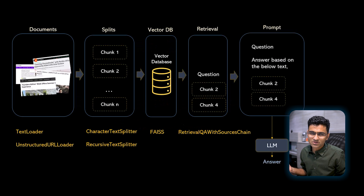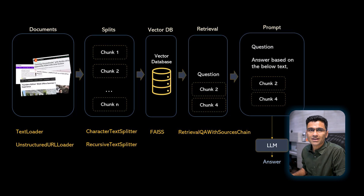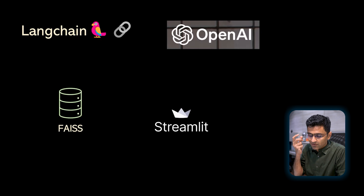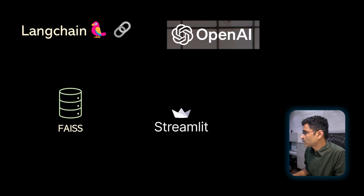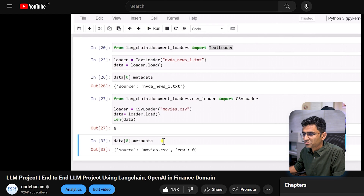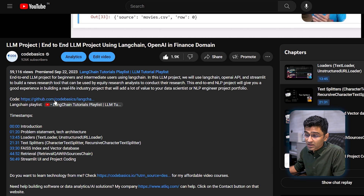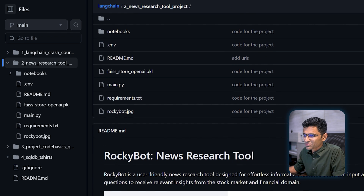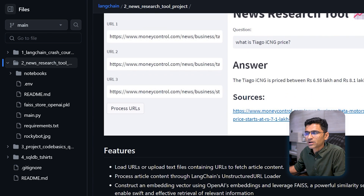Here is the technical architecture of the project. We are using a popular framework called Langchain, and various classes from this framework are used in this project. In terms of technology and tools, we are using Langchain, OpenAI, FAISS which is a vector index or vector database from Facebook, and Streamlit for building the UI. The project is available on YouTube as a free project with all source code included. If you click on the source code link, you will go to GitHub where you will find all the source code and all the help required to set up this project.